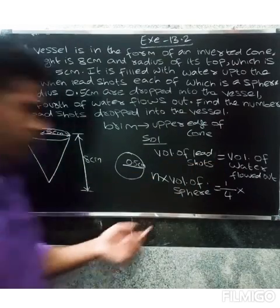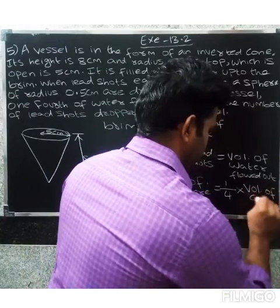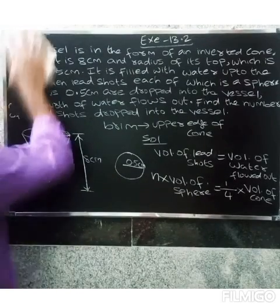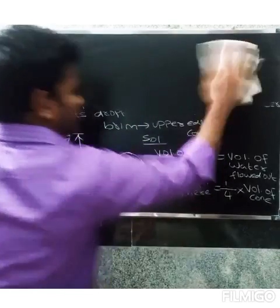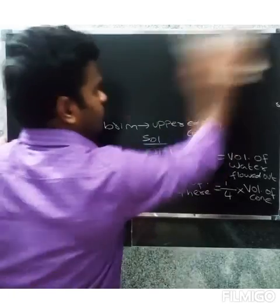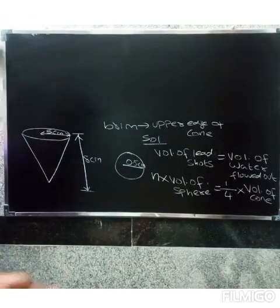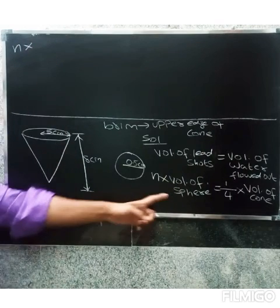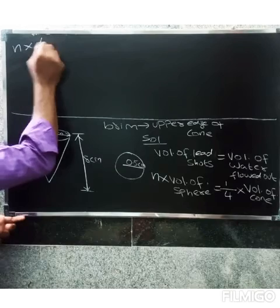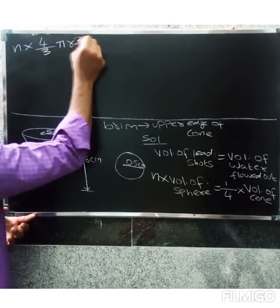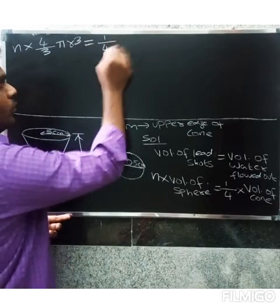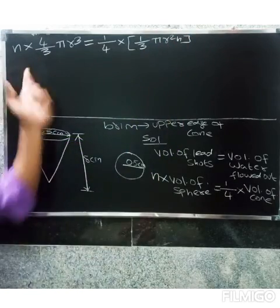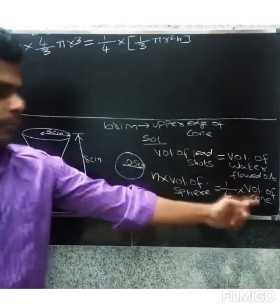So one-fourth of the volume of the cone equals the volume of water flowed out. Therefore n times the volume of the sphere equals one-fourth times the volume of the cone. Just substitute the formulas: n × (4/3)πr³ = (1/4) × (1/3)πR²H.